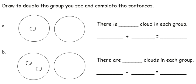The directions say to draw to double the group you see and complete the sentences. In my first picture, I have one group with one cloud in it, so I'm going to copy that one cloud into the second group. This creates the double. There is one cloud in each group, and 1 plus 1 equals 2.